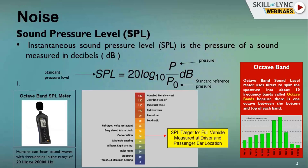Octave bands are a spectrum filter that divides the frequency spectrum into 10 bands. Each band provides clear values about which part is contributing to the noise. Each band has a predefined component responsible for the noise created at that frequency. For example, if the wheel or steering is responsible, it would appear in a specific octave band, allowing us to identify the responsible parts and apply measures accordingly.